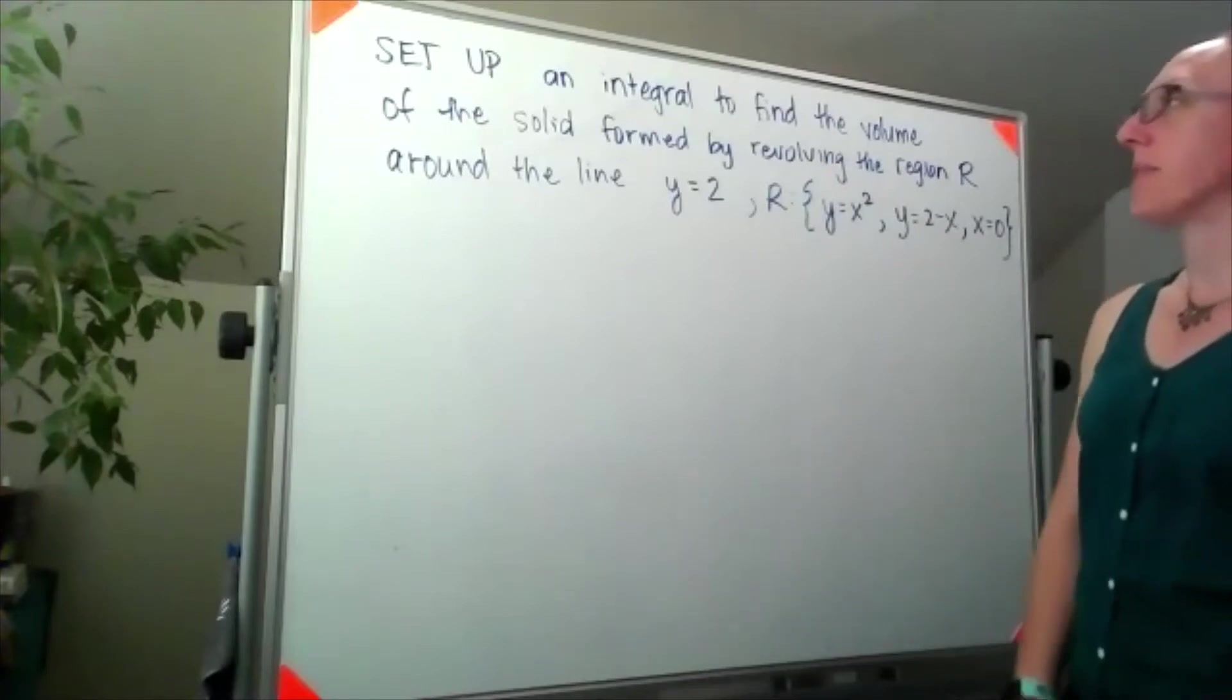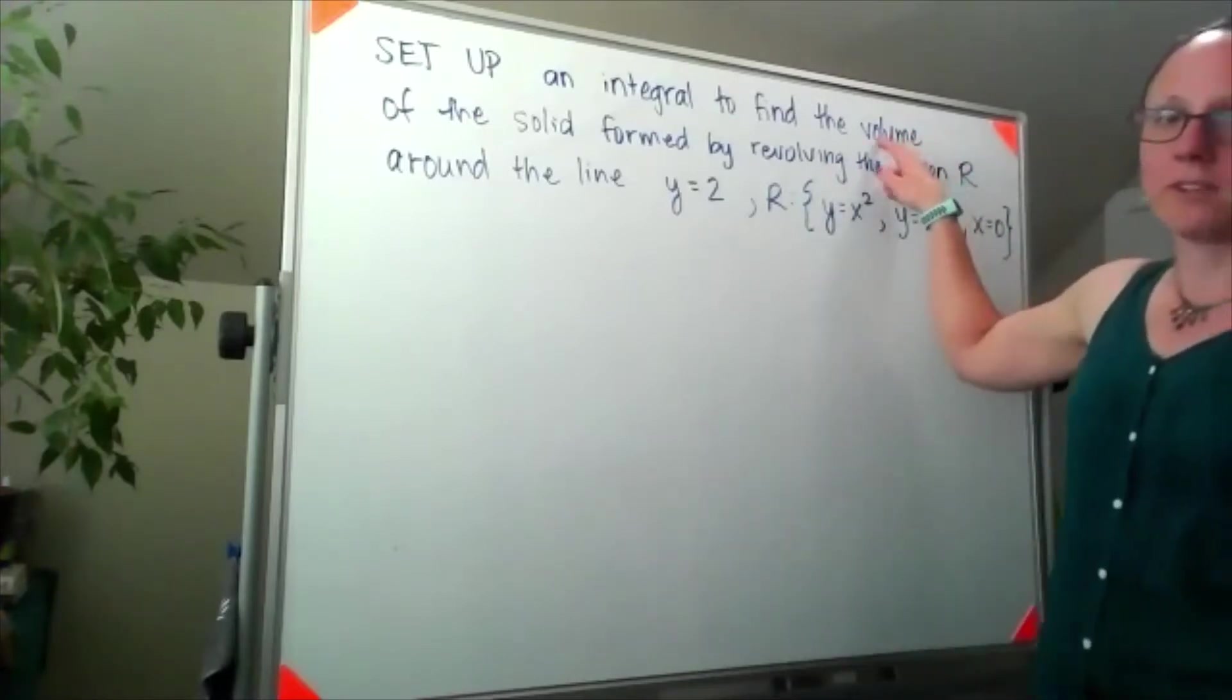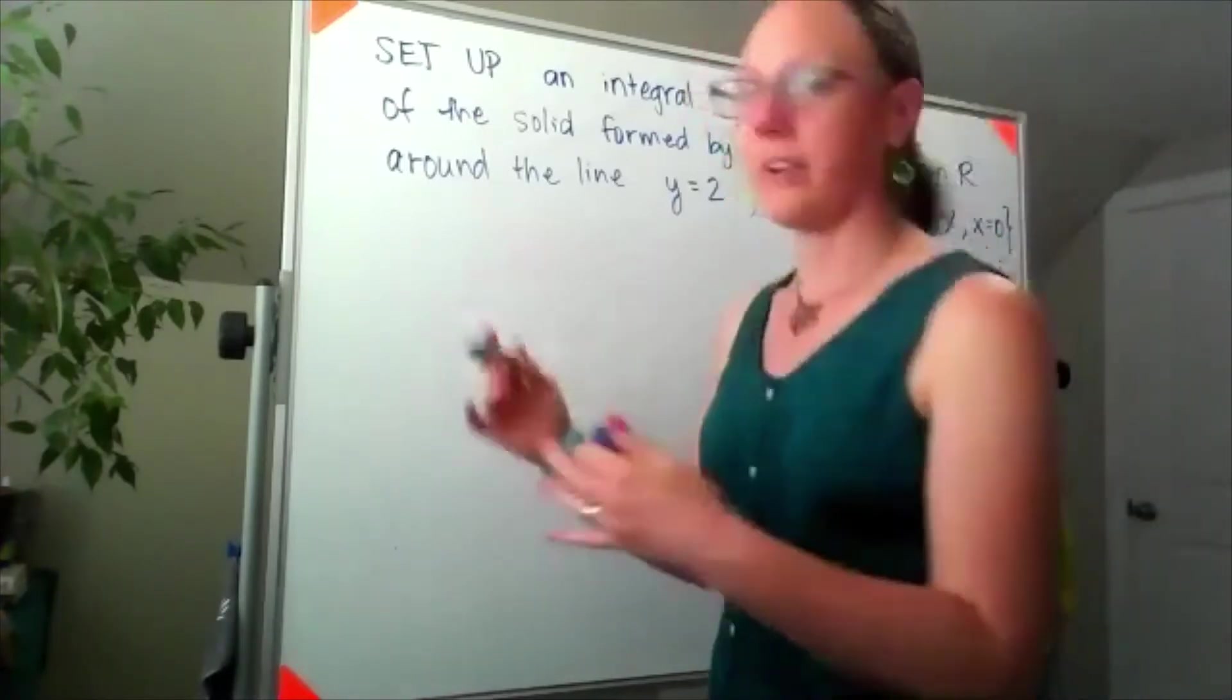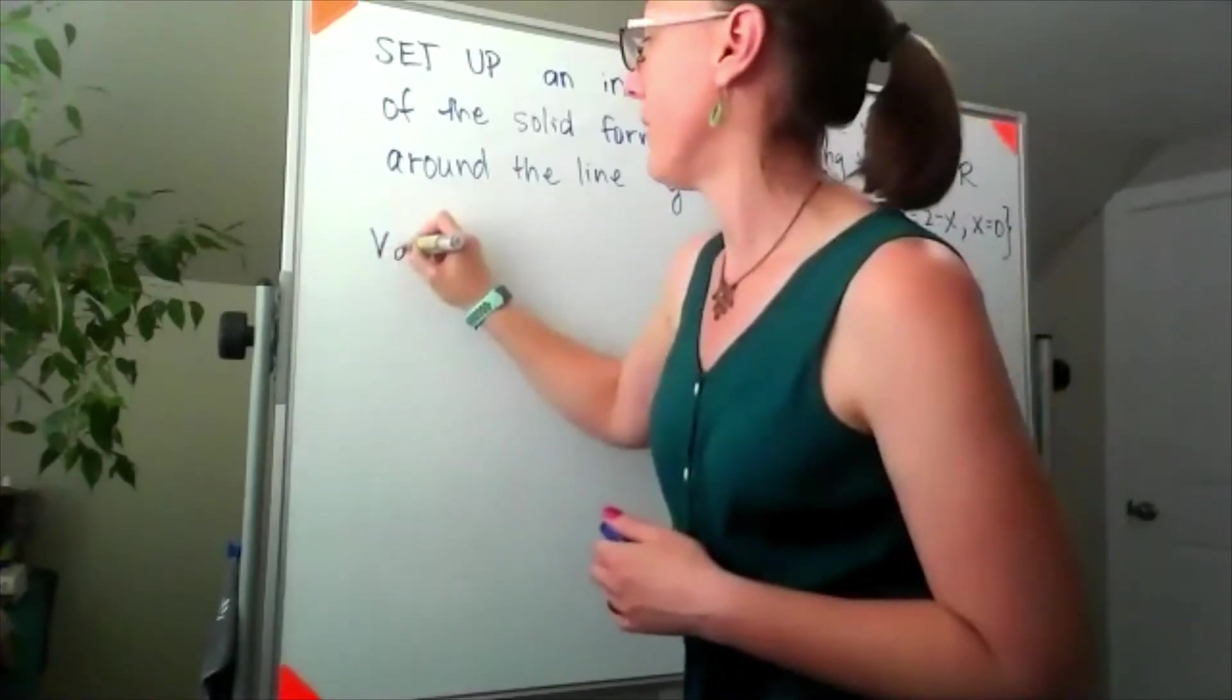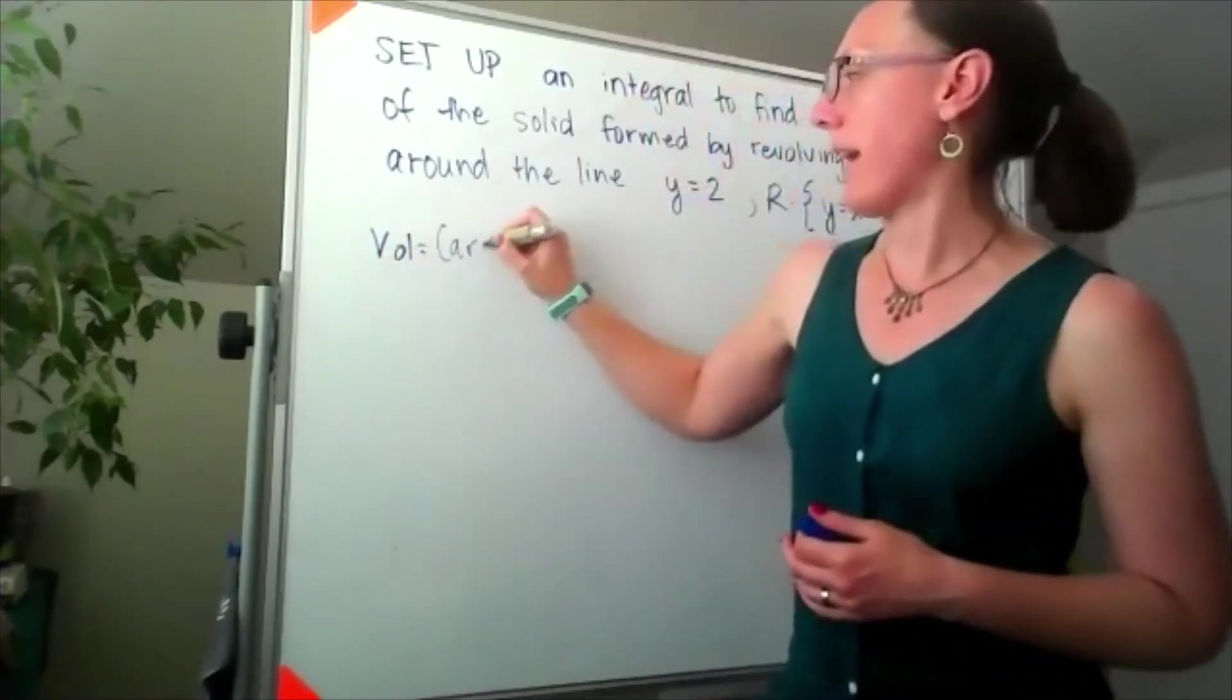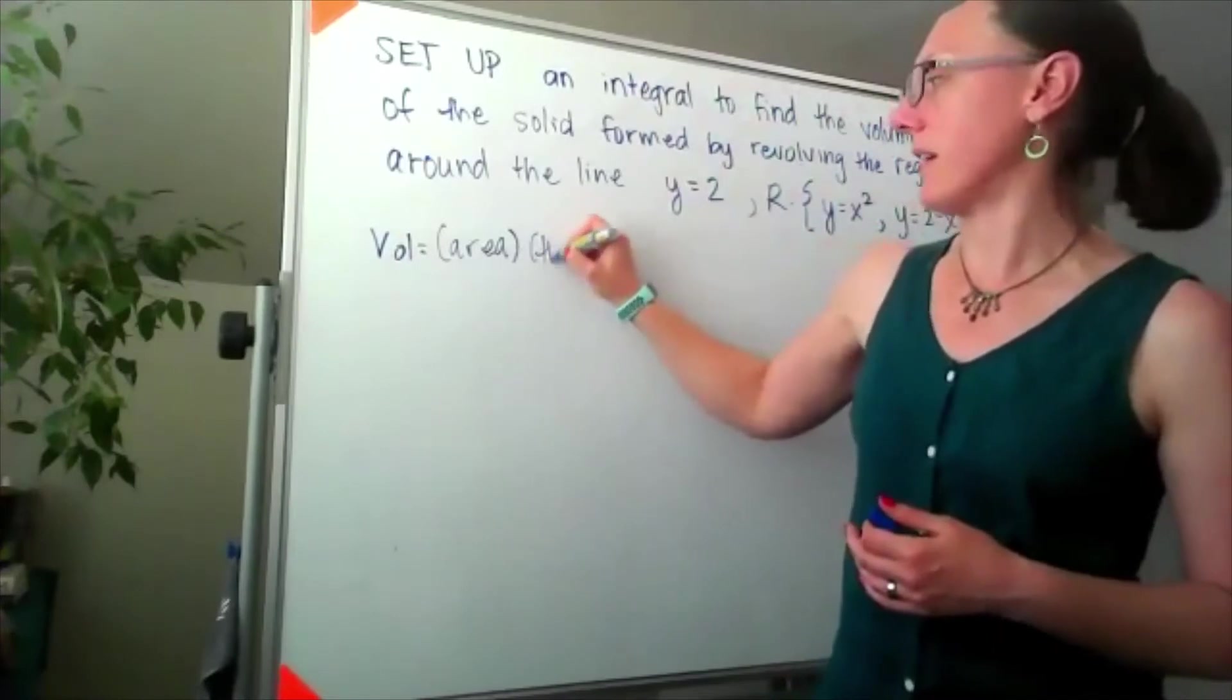Okay, things I know: we're trying to find a volume, so if I'm trying to find a volume I already know I'm thinking. Personally, I'd credit my volume is an area times a thickness.